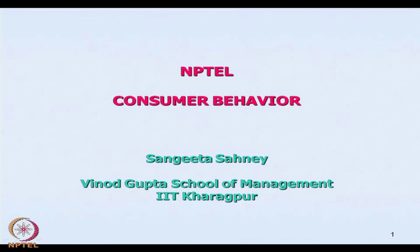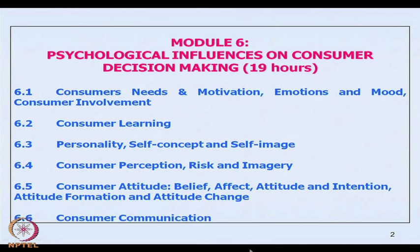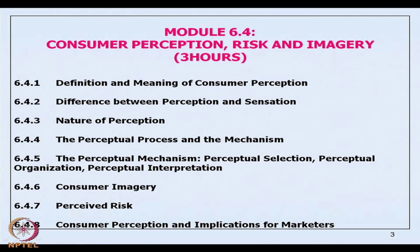Namaskar. Continuing with our module on psychological influences on consumer decision making, we shall today be moving on to module 6.4, where we shall be talking about consumer perception, risk and imagery. In this module, we shall be speaking about the definition and meaning of consumer perception, the difference between perception and sensation, the nature of perception, the perceptual process and mechanism, perceptual selection, perceptual organization, perceptual interpretation, consumer imagery, perceived risk, and implications for the marketer. We shall be completing this module in a total of three hours.